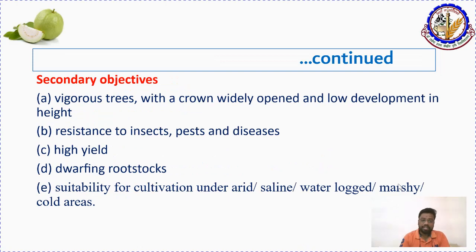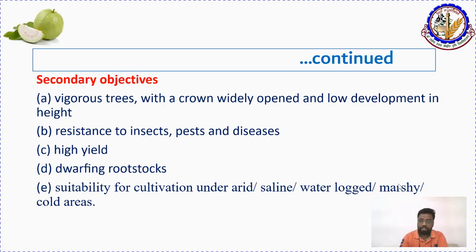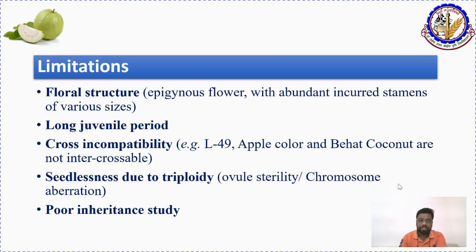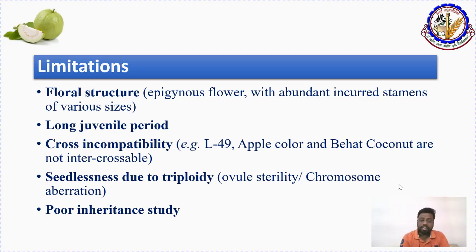Apart from these, the tree should be vigorous, canopy should be properly developed, and plant varieties should be resistant to insect pests and diseases, various abiotic stresses, and dwarfing rootstocks are important secondary objectives. Regarding limitations in breeding, the first one is floral structure — guava flower is epigynous, which is a hindrance in breeding. There are abundant stamens present, so there may be pollen contamination.